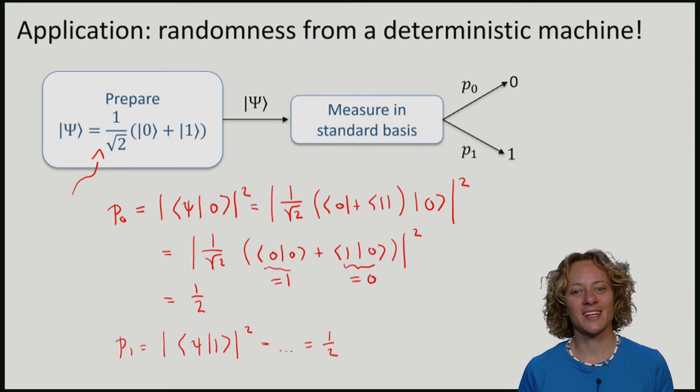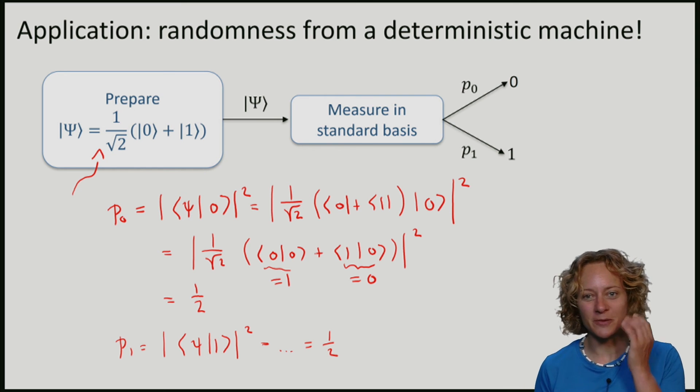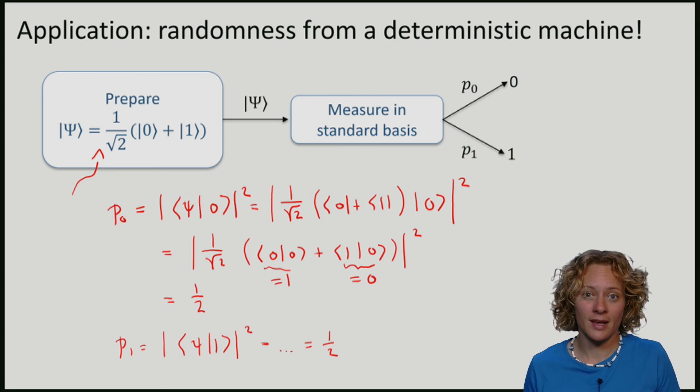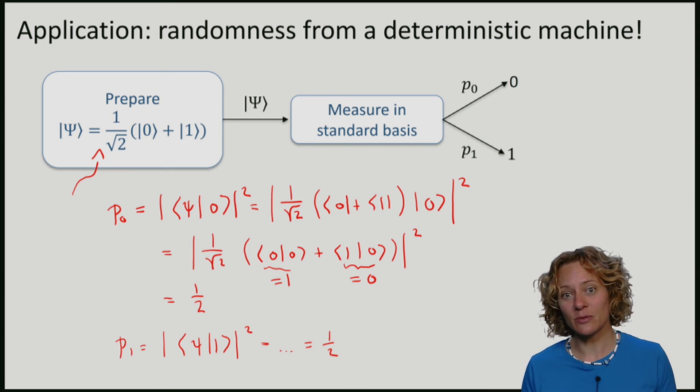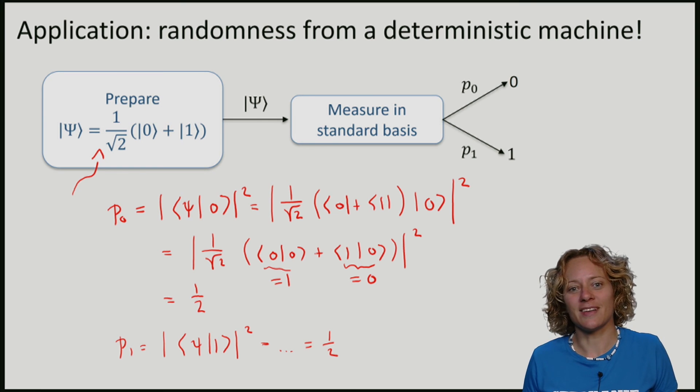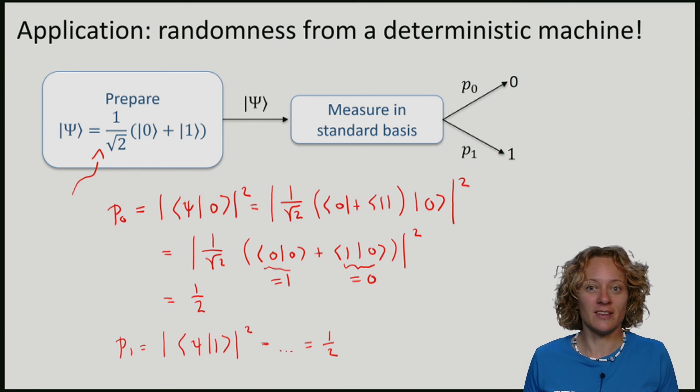Here we have seen that we have built a deterministic machine, a deterministic process that prepares a qubit in an equal superposition between 0 and 1. And if we subsequently measure it in the standard basis, we produce random numbers 0 and 1 with equal probabilities. Quantum random number generators that perform a very similar operation actually already exist and are commercially available.